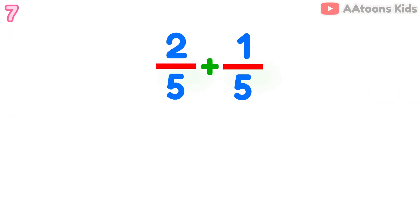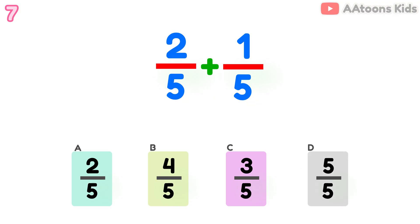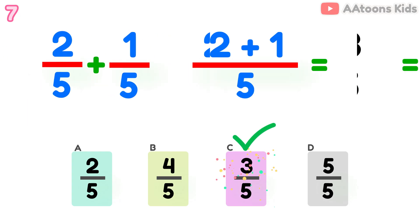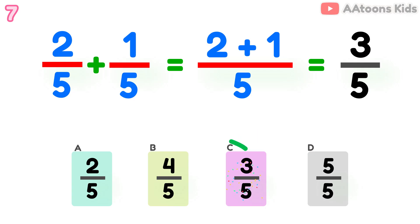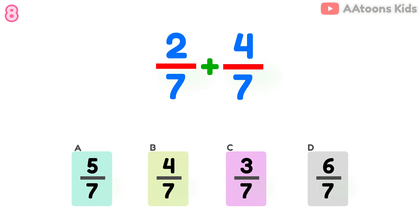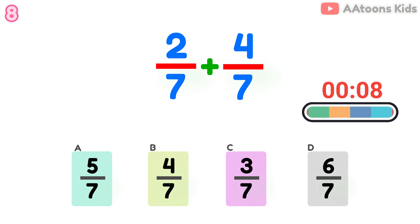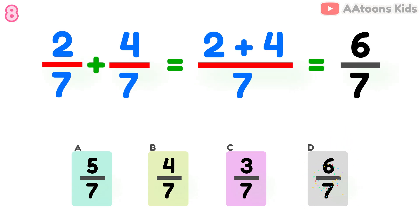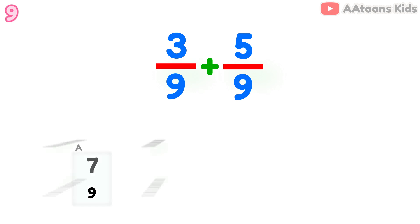Add the fractions: 2 over 5 plus 1 over 5. Add the fractions: 2 over 7 plus 4 over 7. Add the fractions: 3 over 9 plus 5 over 9.